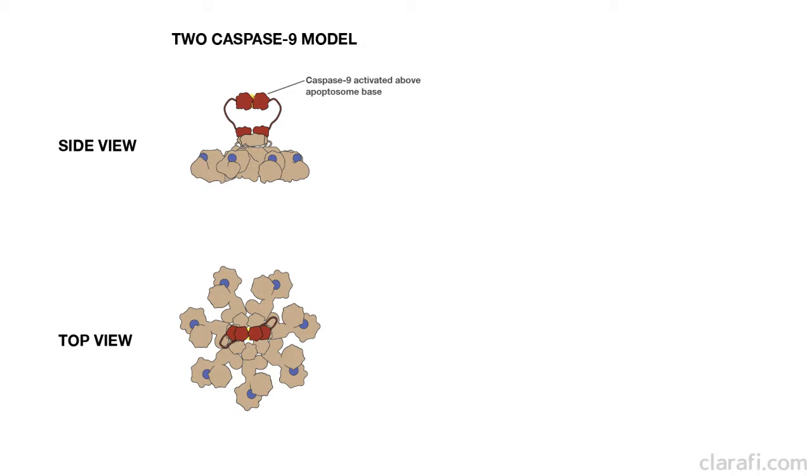One theory states that two caspase 9 molecules bind to the base of the apoptosome at one time. The two catalytic domains of caspase 9 bind to one another above the base of the apoptosome and activate each other there.